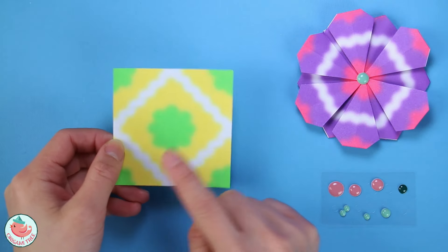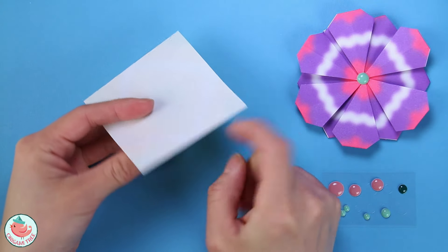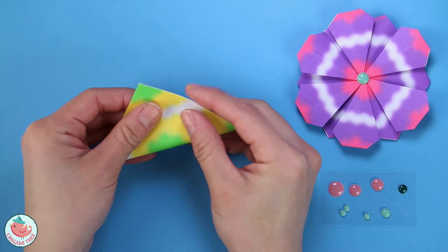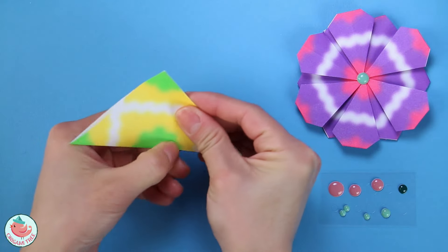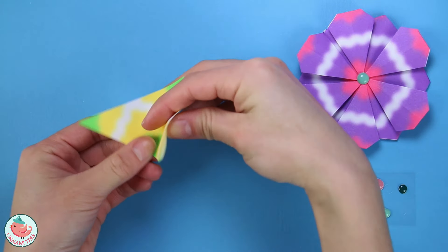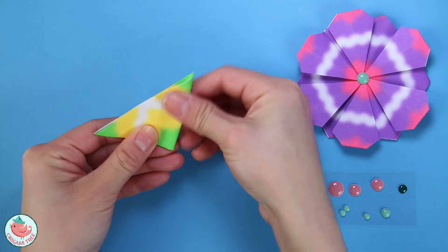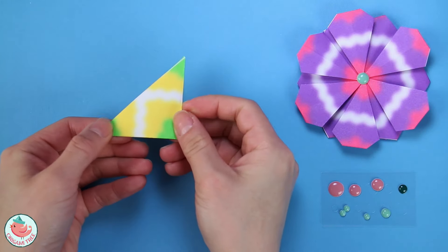So let's start with making one of the petals. First you're going to take your square sheet of paper and we're going to flip it around so the pattern side is facing down away from you. Then you want to fold the entire thing in half to create a triangle. Now we want to fold the entire thing in half again, and then unfold.